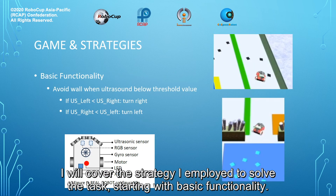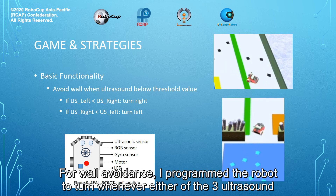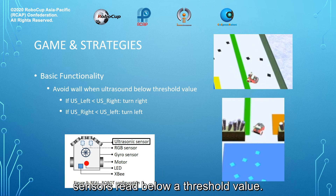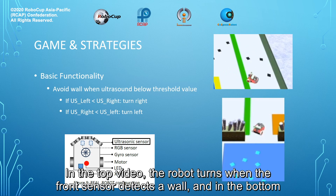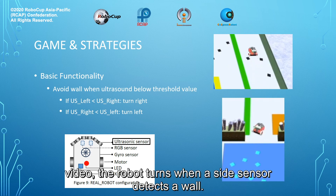I will cover the strategy I employed to solve the task, starting with basic functionality. For wall avoidance, I programmed the robot to turn whenever either of the three ultrasound sensors read below a threshold value. In the top video, the robot turns whenever the front sensor detects a wall. And in the bottom video, the robot turns when a side sensor detects a wall.